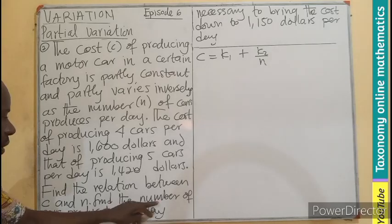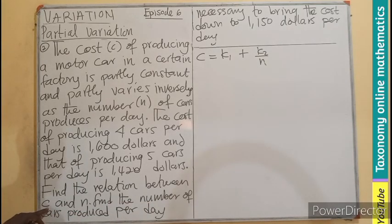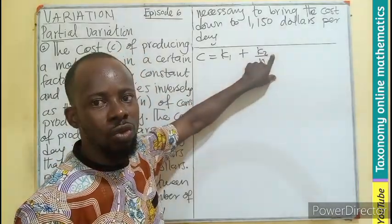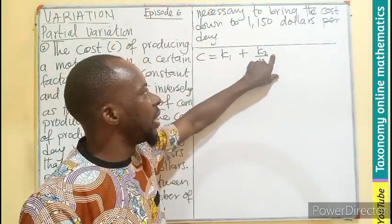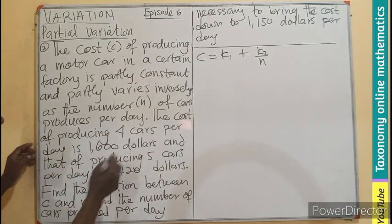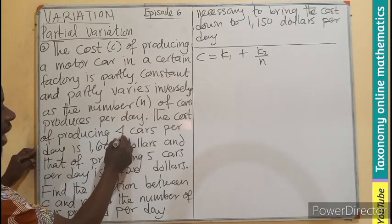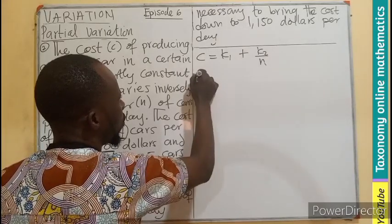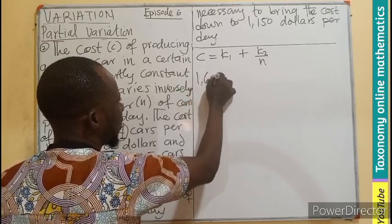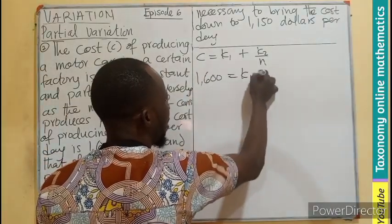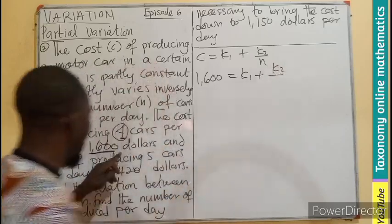Since the question is asking for a relation between C and N, it didn't ask for K1 and K2. So we need to replace K1 and K2 with values. Let's take it from here. The cost, the first N, we have our C. Meaning, 1,600 equals K1 plus K2 over N.